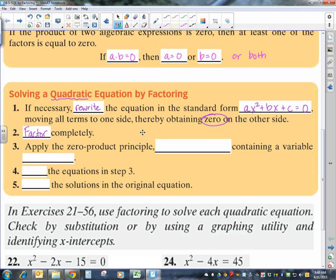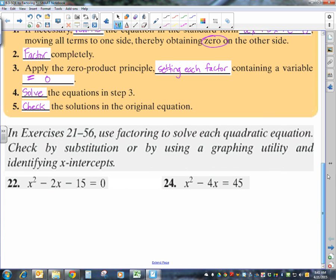Then you're going to apply the 0 product principle. And what you're going to do with that means you're going to be setting each factor containing a variable equal to 0. Then you're going to solve the equations that you get. So every factor that you set equal to 0, you're going to go solve it. And then you're going to check it. And this is what I want you to write here. There's two ways to checking. One of them is by substitution, or graphing utility. And I'm actually going to talk about both. Most of the time I'm going to show you graphing because I want you to get a good picture of what it means when we're checking or solving these equations.